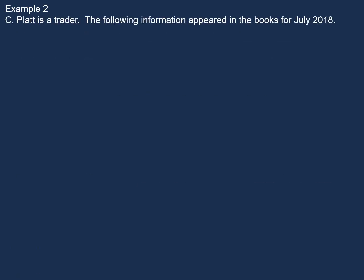In our Example 2, which is our last example, we will have a look at our debtor's journal and our debtor's ledger. Cplut is a trader. The following information appeared in the books for July 2018.